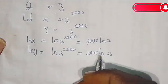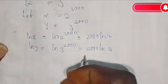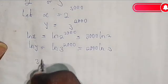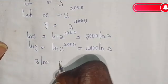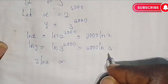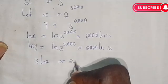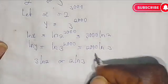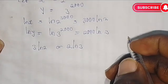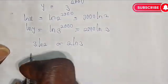1000 can divide into both. Dividing both by 1000, we have 3 times the natural log of 2 on one side, and on the other side we have 2 times the natural log of 3.